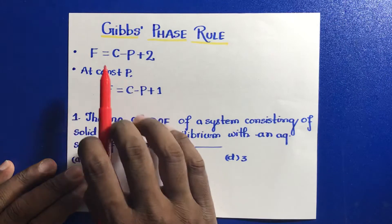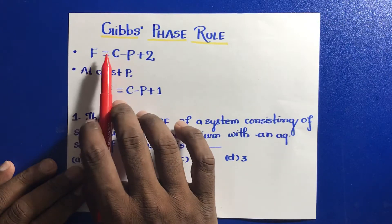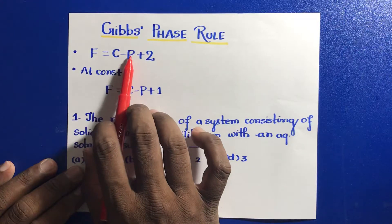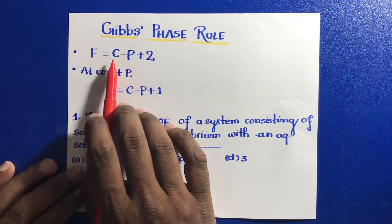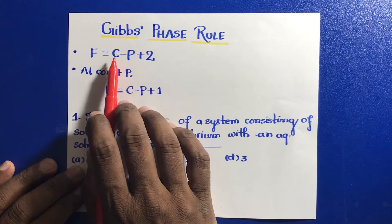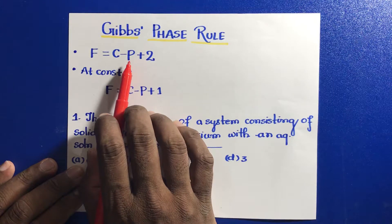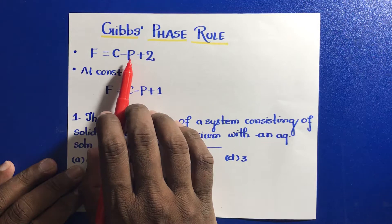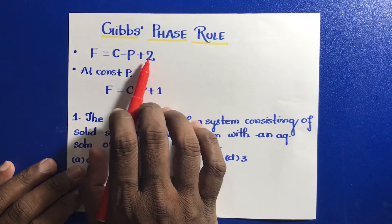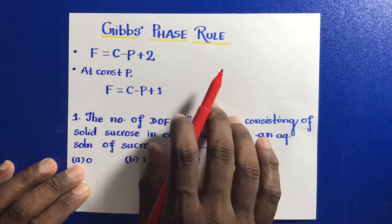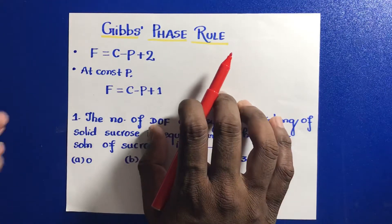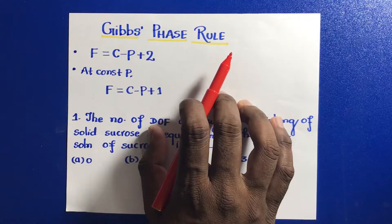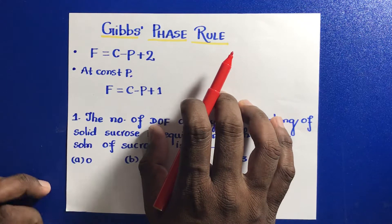Mathematically, this is given as F equal to C minus P plus 2, where F is the degree of freedom, C is the number of components, P is the number of phases present at equilibrium. Degree of freedom basically means the number of independent intensive variables like pressure and temperature.